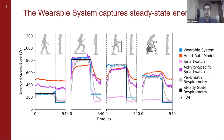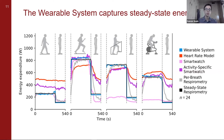If we look at a smartwatch, things become more complicated because it's a closed-source commercial model and we don't know exactly what's going on. In some cases, similar to heart rate, there's a delay and offset indicating it may be relying on heart rate. In other cases, it seems to not have this delay, possibly because the model is using wrist motion to estimate energy expenditure more quickly. But on average, the wearable system had at least three-fold lower error than the heart rate model, the smartwatch, and the activity-specific smartwatch.